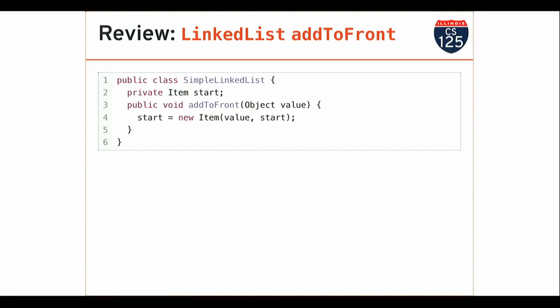Let's look at addToFront. This is something we'll give you when we ask you, starting tomorrow, to start working on operations on linked lists. All I'm doing here — a very simple operation — is: I store the start of the list, that's all the simple linked list class needs to store. When I add an item to the front, I create a new item with the passed value. Its next reference gets whatever start is, so the next item in the list is whatever the previous start was. Then I set start to that new value.